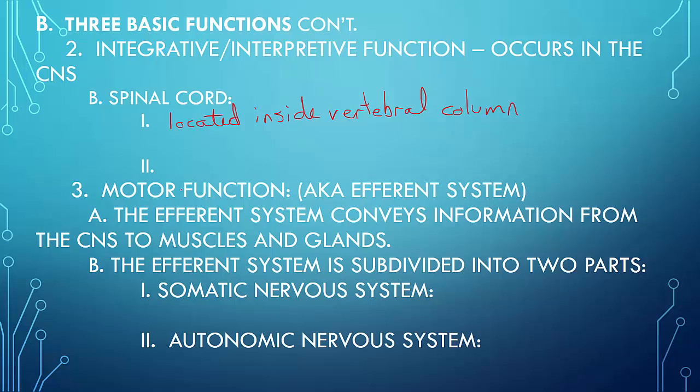The third function is motor functions, and this is the efferent system. The other one, the first one that we looked at, remember, was the afferent. So your sensory functions are the afferent, whereas your motor functions are the efferent. This is where the difference between the A and the E makes a big difference. So the first thing that the motor functions do is that it conveys information from the CNS to muscles and glands.